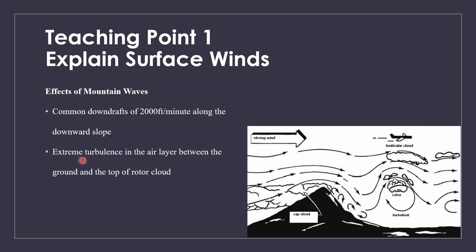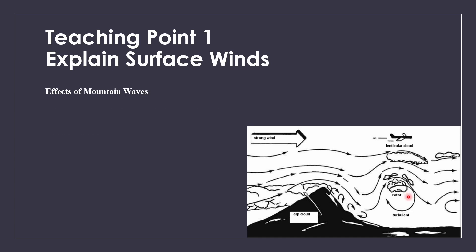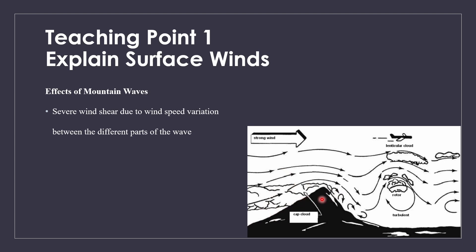There will also be extreme turbulence in the air layer between the ground and the top of the rotor clouds — you want to avoid these as much as possible because they are very bad for your aircraft. There is also severe wind shear due to wind speed variation between different parts of the wave. When you think about a 3D mountain rather than a 2D diagram, different sides will have different heights, so the waves will act differently and create varying wind speeds, causing wind shear.